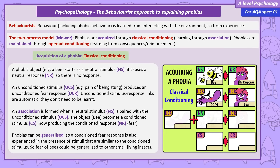However, when the neutral stimulus — in this case the bee — is paired with the unconditioned stimulus of being stung, an association is formed and the bee becomes a conditioned stimulus, now producing the conditioned response of fear on its own. Phobias can be generalised, so a conditioned fear response is also experienced in the presence of stimuli similar to the conditioned stimulus — for example, a fear of bees could be generalised to other small flying insects.